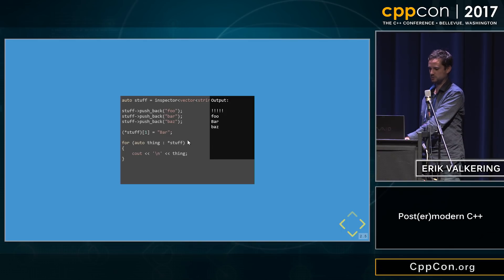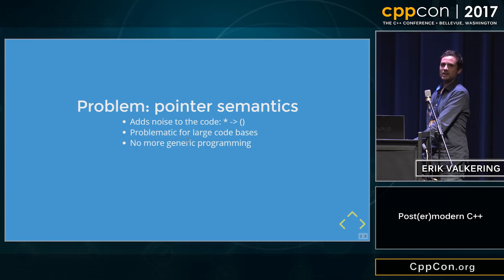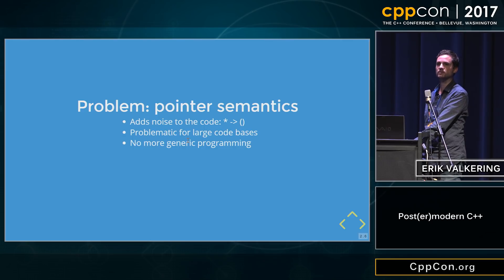We need to update our code, but I don't like this code. There are several problems with it — it's basically a mess. We add a lot of noise to it. Imagine you have a code base of a million lines of code and you need to propagate these changes everywhere — that won't work. And it's totally not generic because if this type would be a normal vector, then you have value semantics and suddenly we have pointer semantics. That's not the solution I would really recommend.